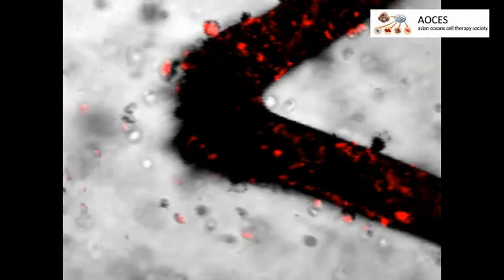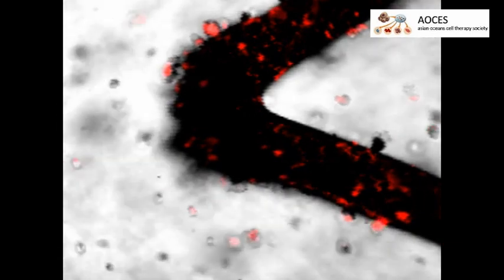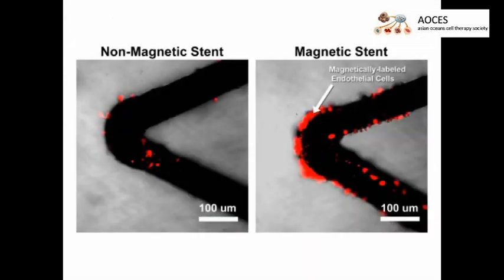The loading of iron into the cells is high enough to achieve magnetic capture of viable cells to ferromagnetic implantable medical devices. The magnetically labeled endothelial cells are attracted to a ferromagnetic stent at a higher rate than a non-magnetic stent.